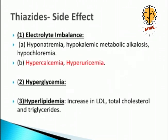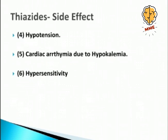Thiazide side effects: First is electrolyte imbalance — hyponatremia, hypokalemic metabolic alkalosis, hyperchloremia. Second is hypercalcemia and hyperuricemia, due to increased calcium reabsorption. Third is hyperglycemia. Fourth is hyperlipidemia — increase in LDL, total cholesterol, and triglyceride levels. Fifth is hypotension, though not very common. Sixth is cardiac arrhythmia due to hypokalemia from increased potassium excretion. Seventh is hypersensitivity to the drug.